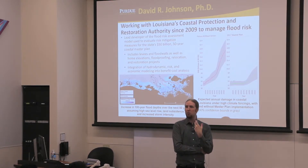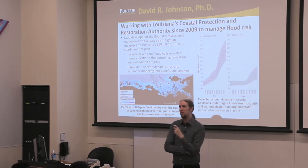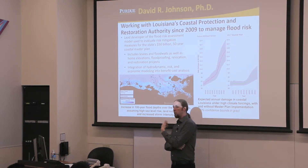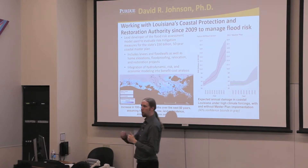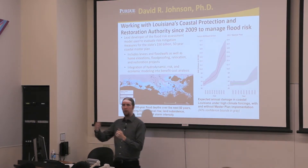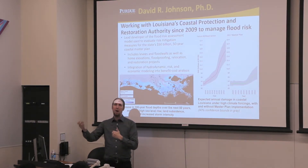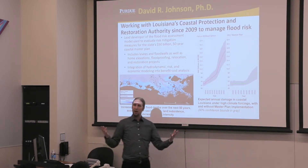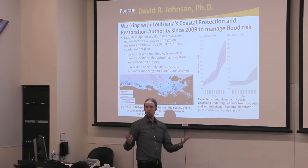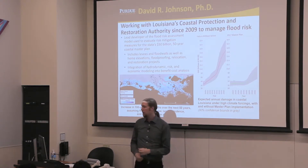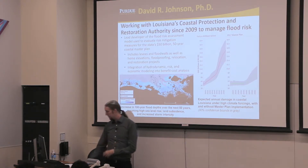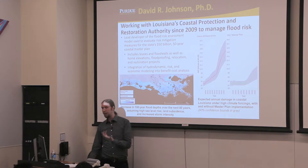We try to identify policies that reduce risk effectively and restore land effectively across a wide range of those uncertain future scenarios. That's the concept of robustness — trying to identify policies or solutions that perform pretty well, close to optimal, across a wide range of different future scenarios.